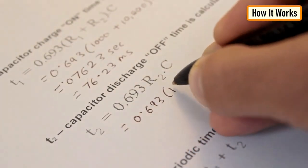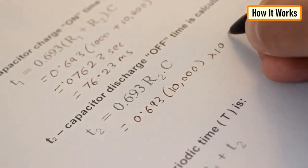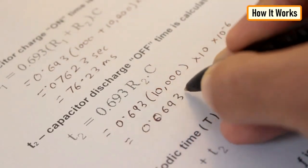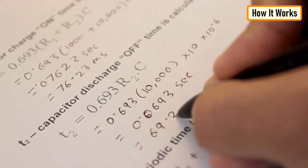Now, for capacitor discharge off time or T2, we need to multiply 0.693 times R2 and C3 which then gives a value of 69.3 milliseconds.